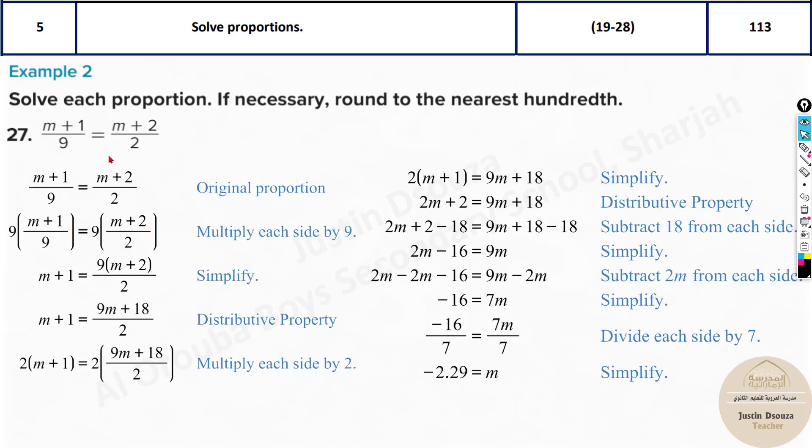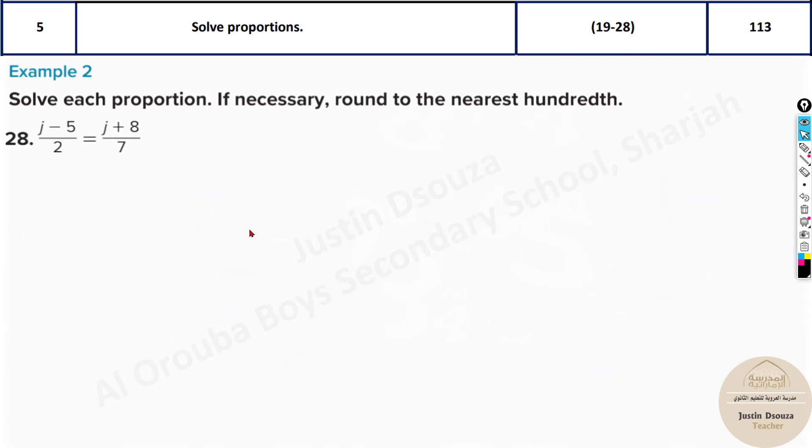This is also easy, but let me just do it. This is the last problem. Now here, take the 7 to the other side. It will be 7 times j minus 5, that equals 2 times j plus 8. Now the 7 multiplies inside: 7j minus 7 times 5 is 35, that equals 2j plus 8 times 2 is 16.